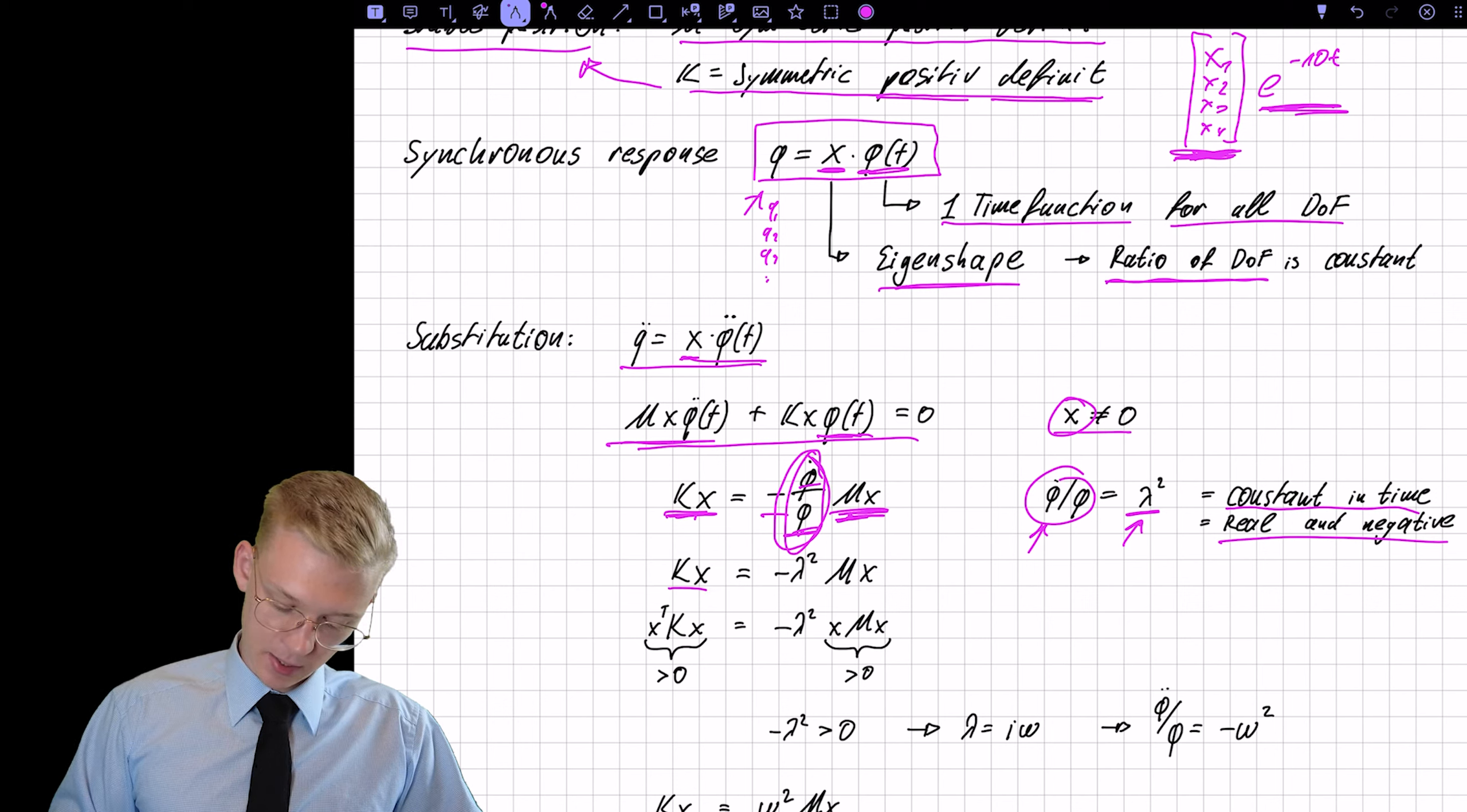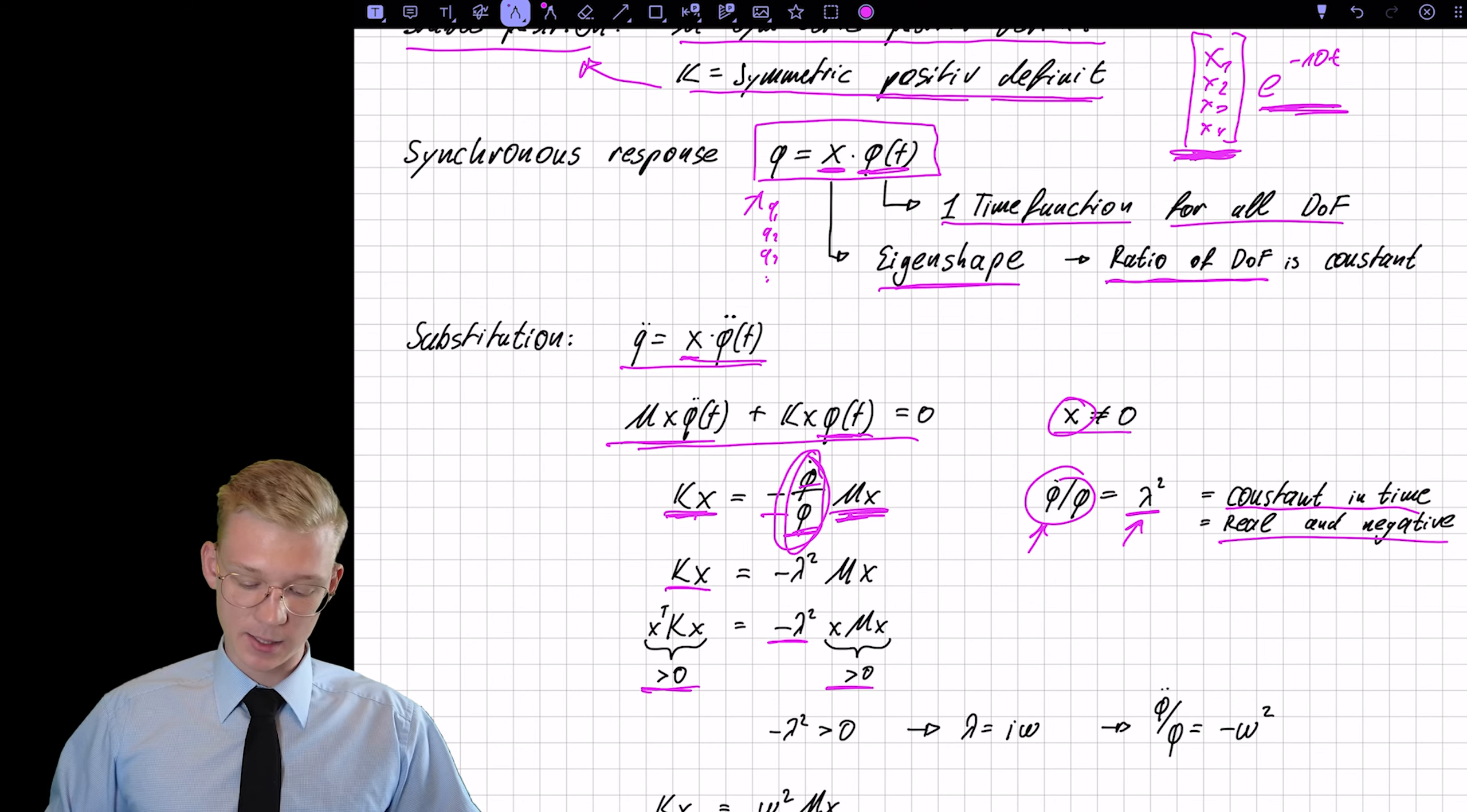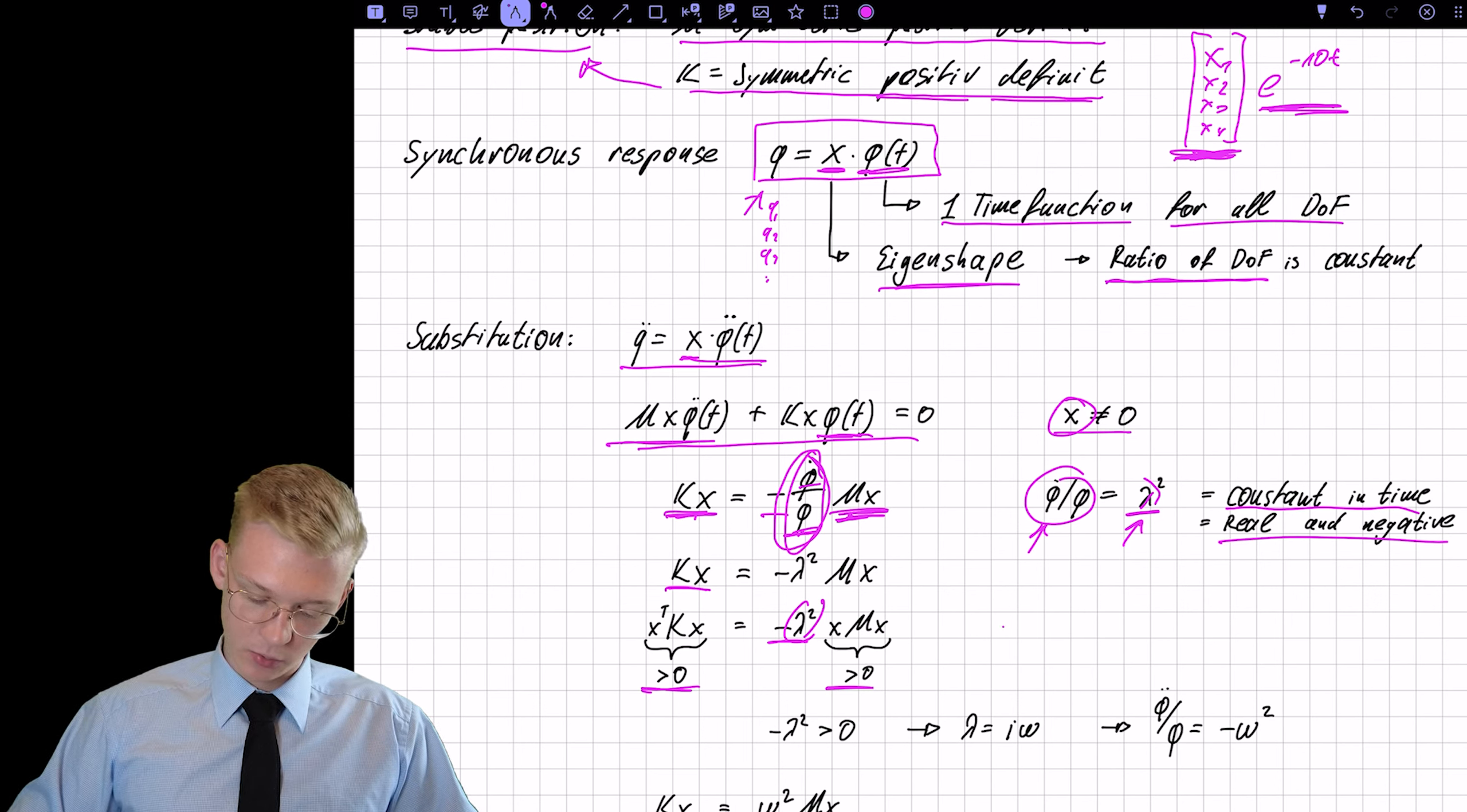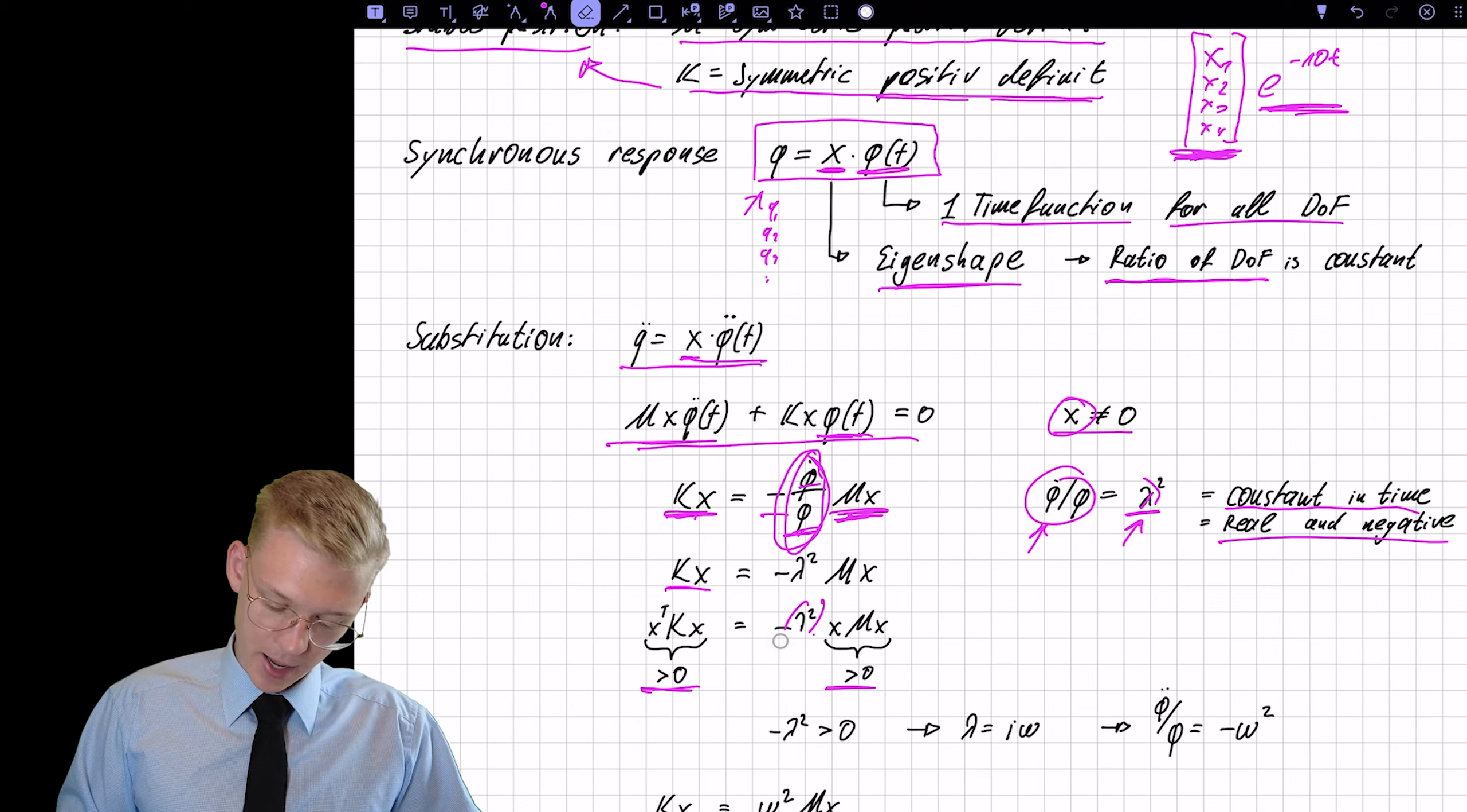Why does it have to be constant? Because this is not dependent on time and this is not dependent on time. Only phi double dot and phi divided by phi has to be constant in time because the term on the left and right are both constant in time. And because this is positive, or better to say if we pre-multiply with X, this is positive.